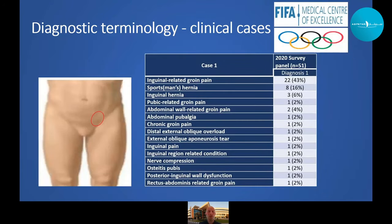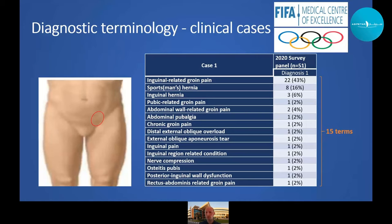As a brief example: a clinical case was presented with pain in the inguinal canal area, with extensive injury history and clinical examination information provided to FIFA and IOC center clinicians. They provided 15 different diagnostic terms. Inguinal-related groin pain was the most commonly used term, and interestingly 'sports hernia' or 'sportsman's hernia' was the second most often used — despite the Doha Agreement and the British Hernia Society both discouraging this term, since an actual hernia is rarely present in athletes and the term likely causes confusion.